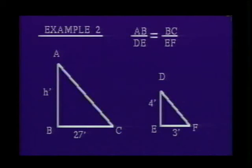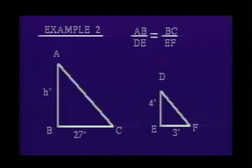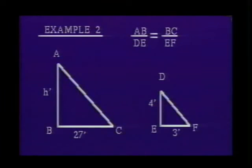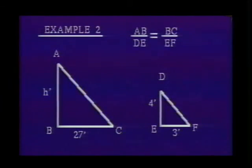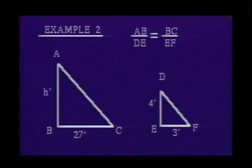The sun provides opportunities to experience the idea of similarity. At any particular time of day in a certain location, the lengths of the shadows of various objects are proportional to the lengths of the objects. Example 2: A tree casts a shadow of 27 feet, while a 4-foot post nearby casts a shadow of 3 feet. What is the height of the tree?